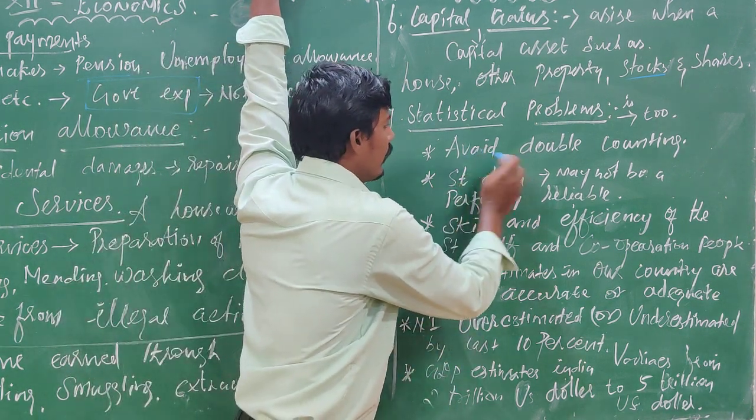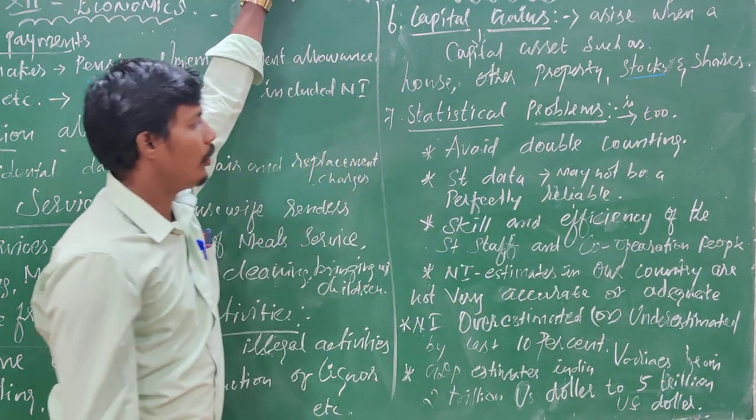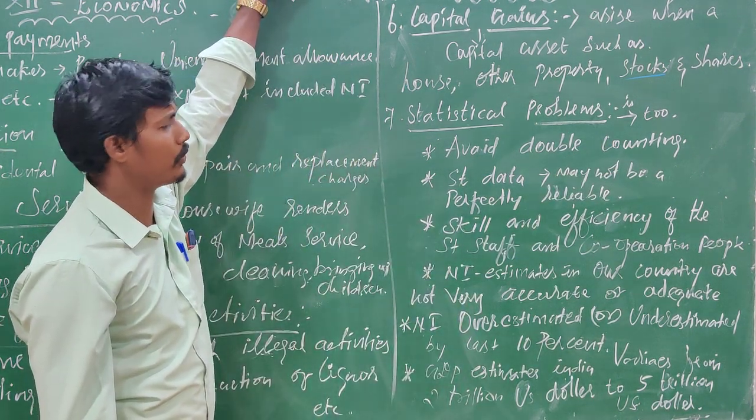To avoid double counting is very important. Double counting leads to overestimation of national income.